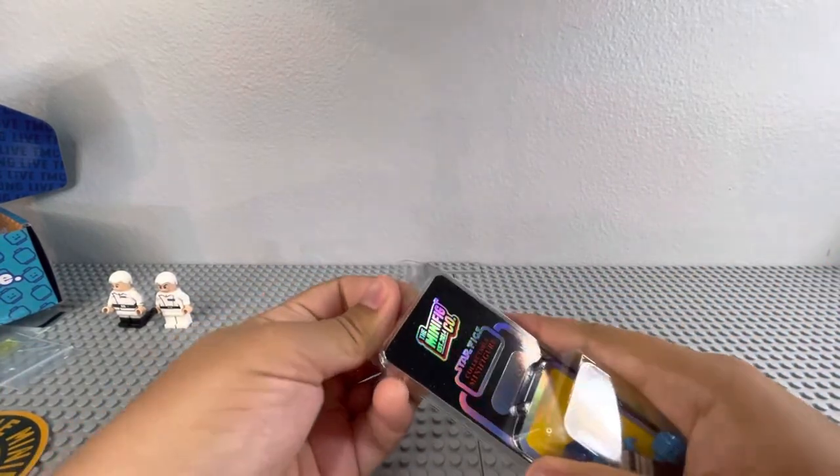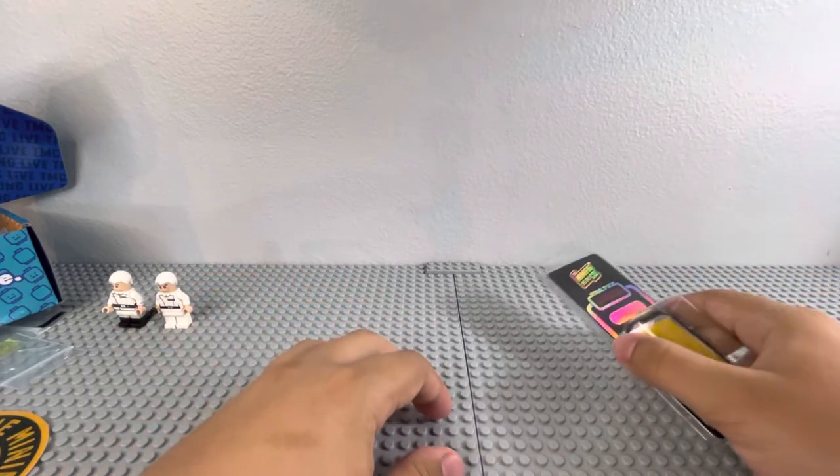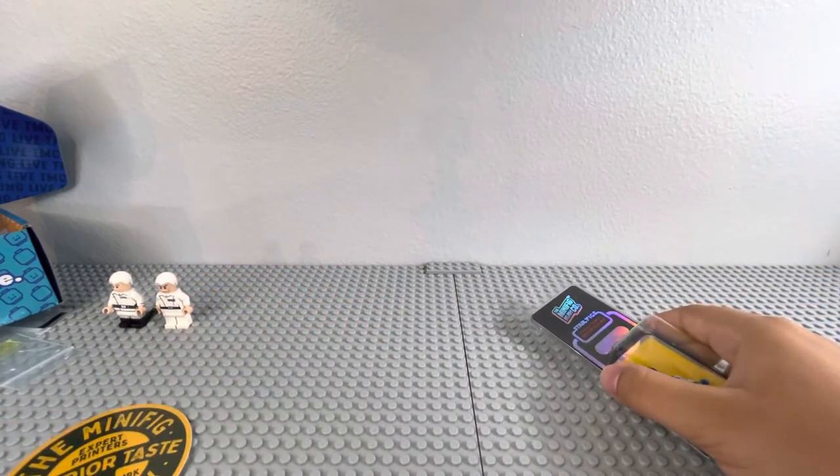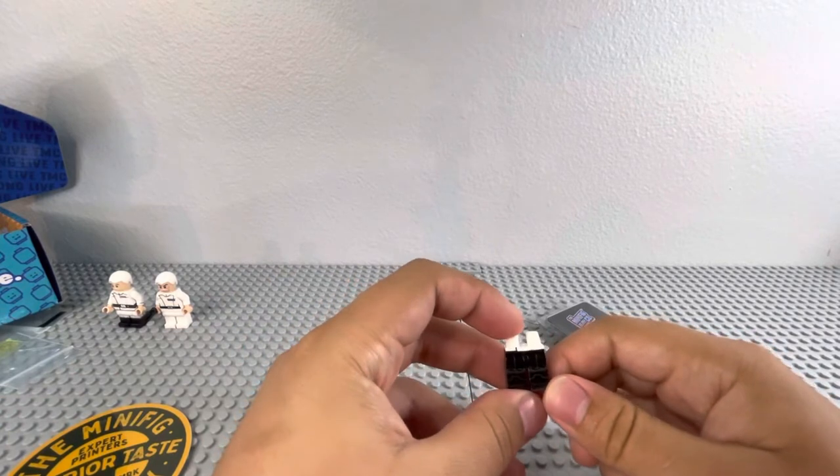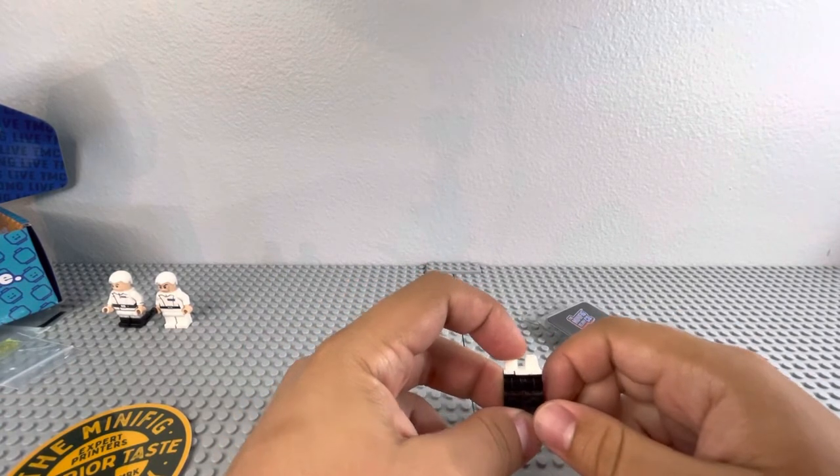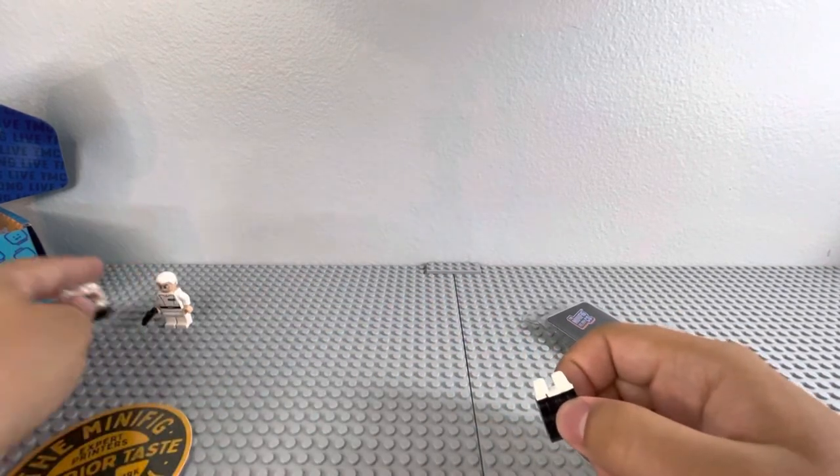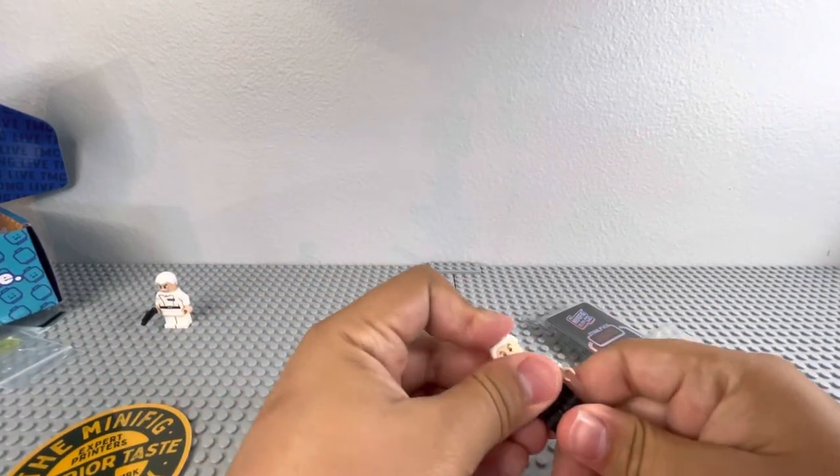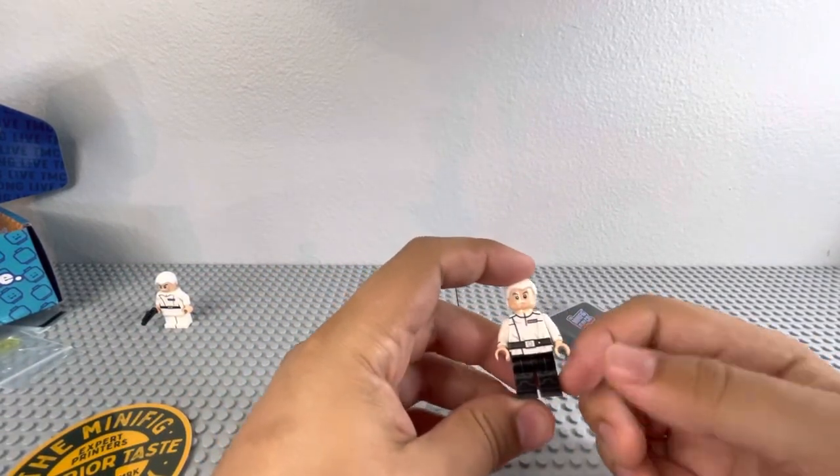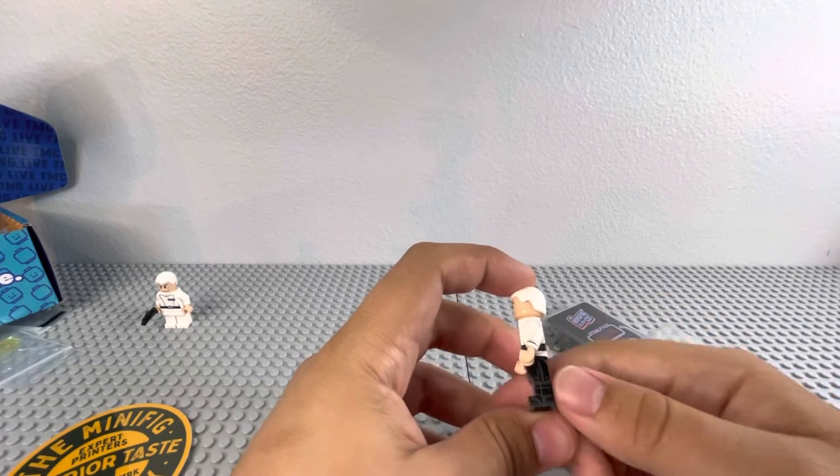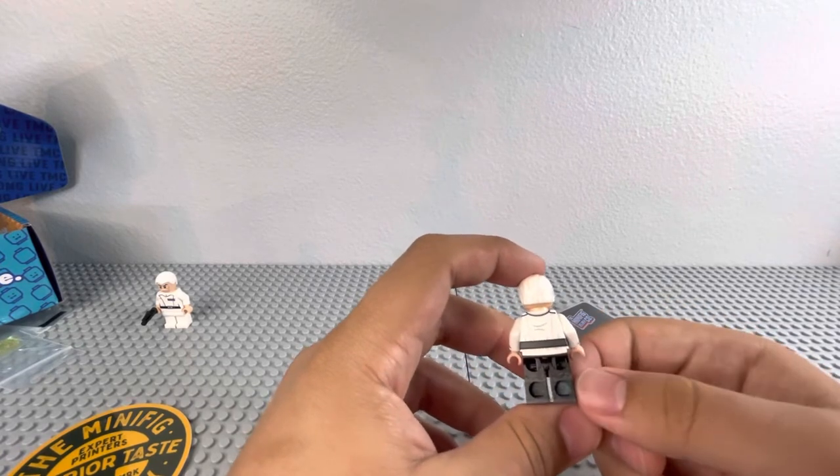Next, Grand Admiral Thrawn. Oh yeah, and the best thing, one of the best things about Colonel Yularen is he comes with these pants. So you can switch it out so he looks like Director Krennic. And Director Krennic had these all-black pants as well, and side of leg printing, back of leg printing, really good as well.